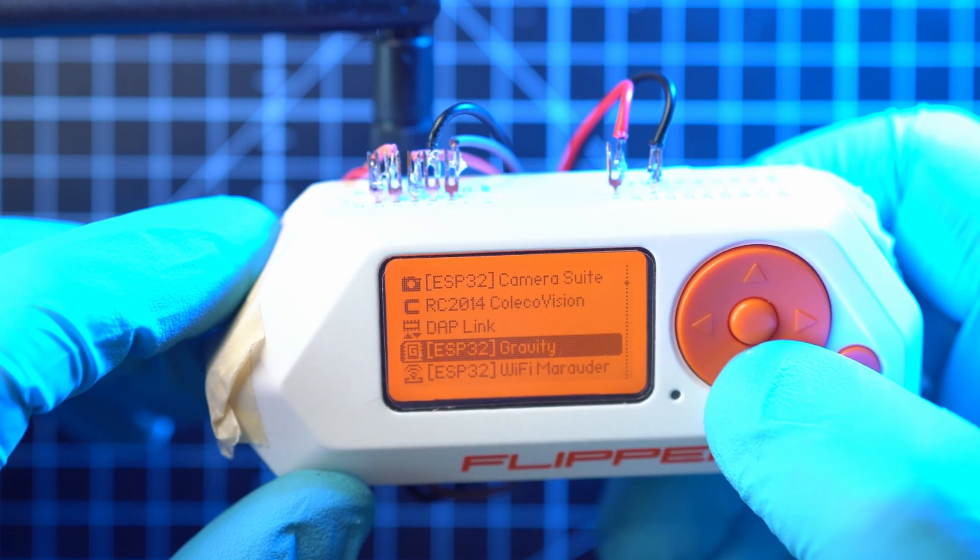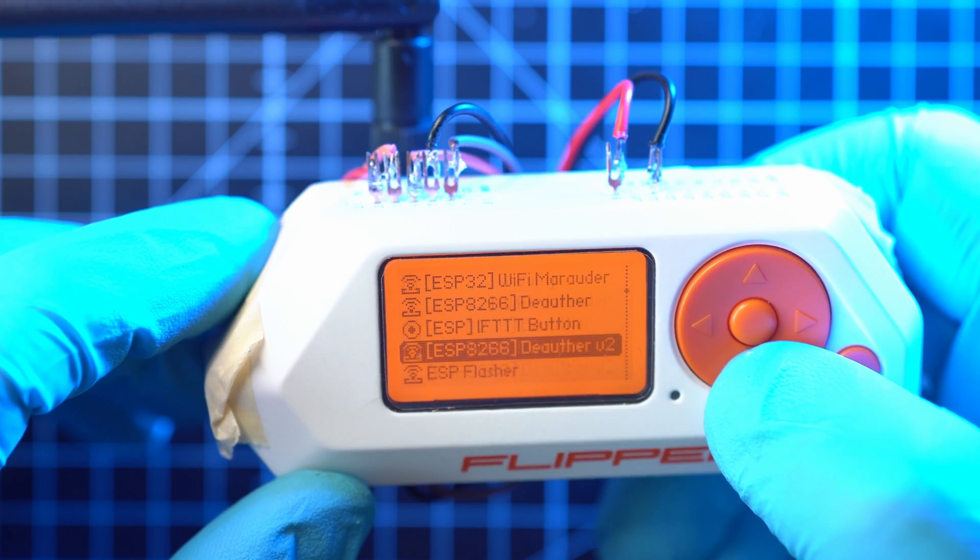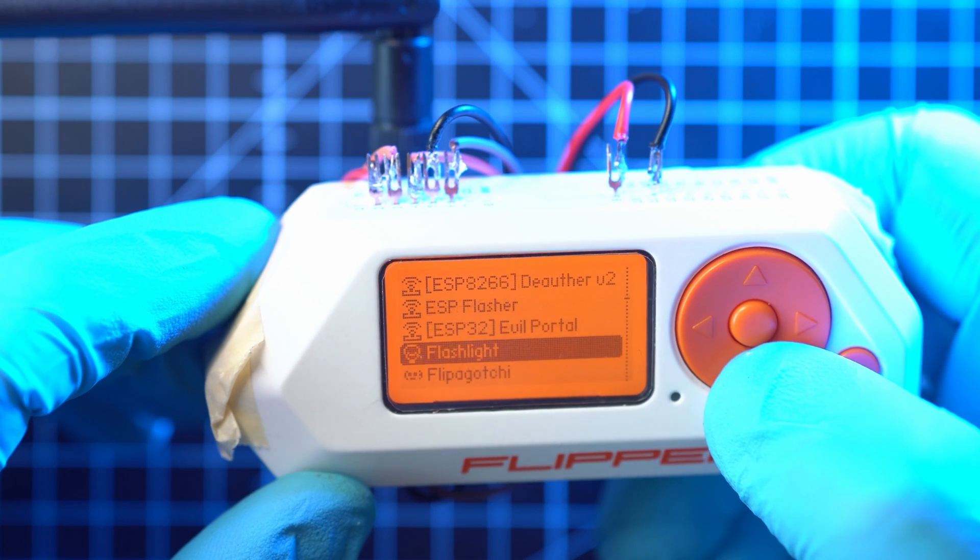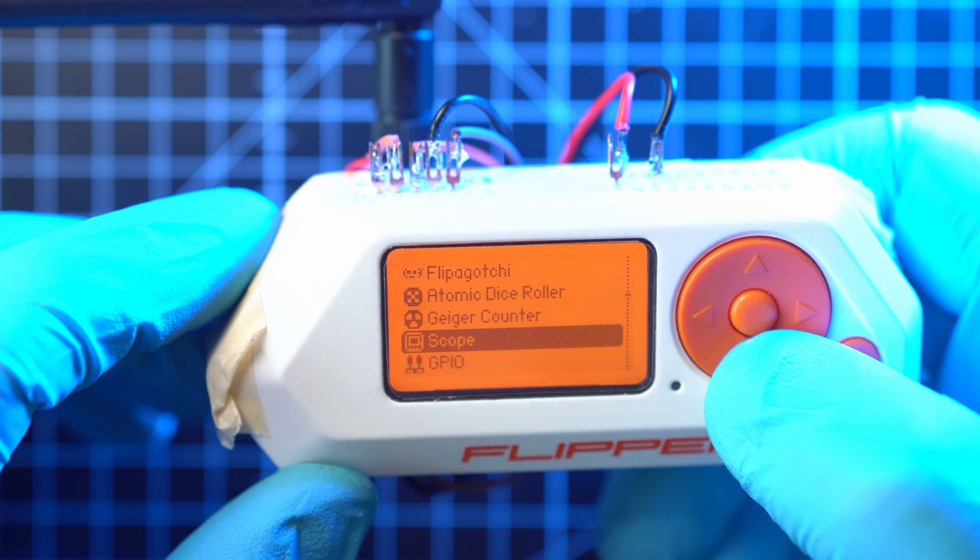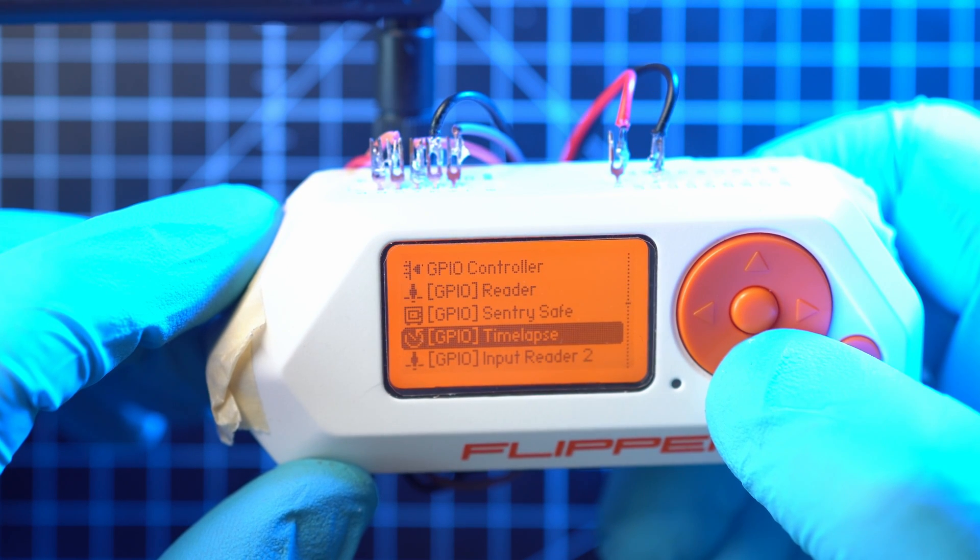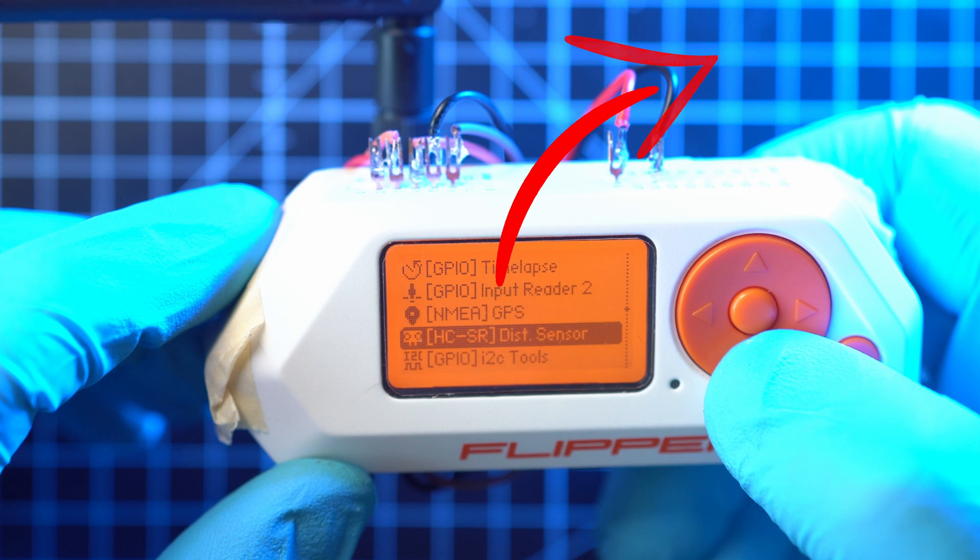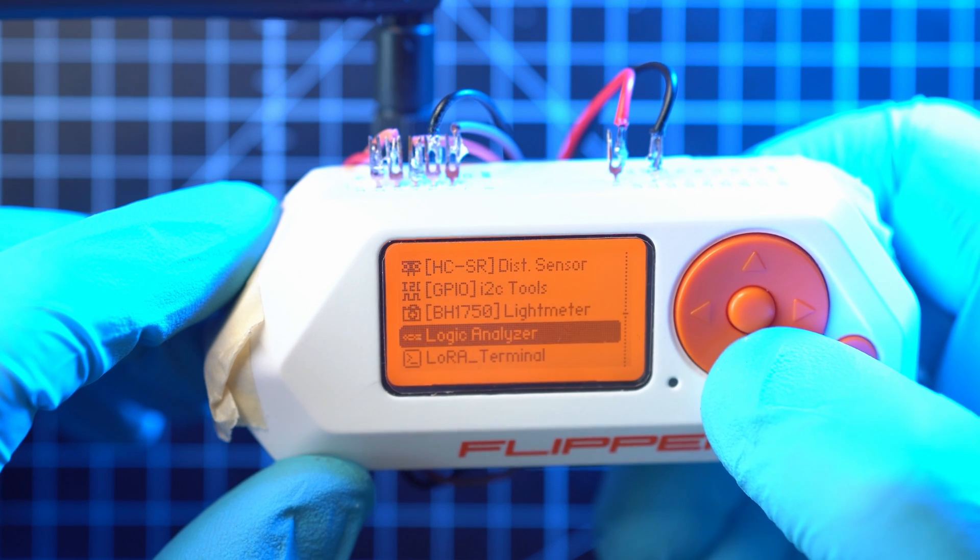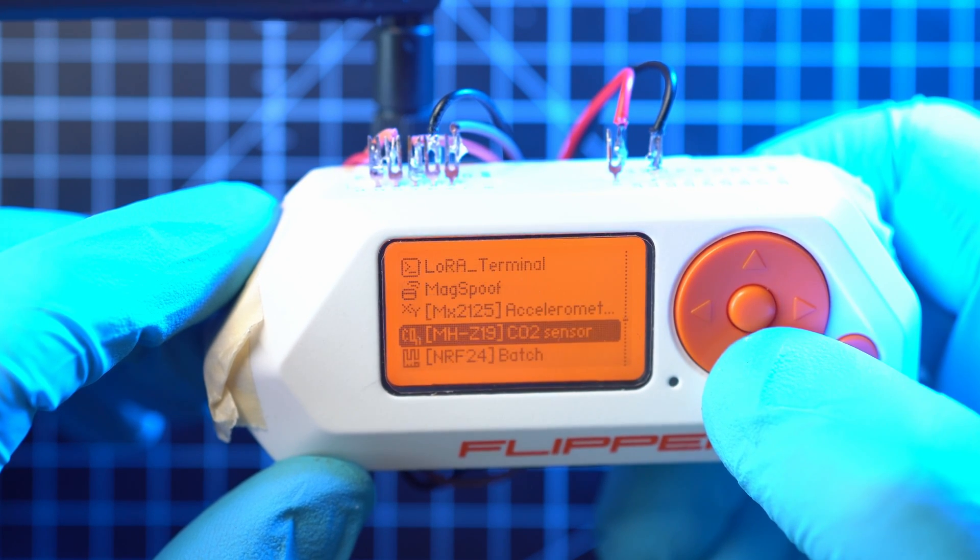This is my module number 8 for Flipper Zero. I have a video about each of them, so please go and check them out. My favorite is CC1101 sub gigahertz module and also GPS module. Make sure to subscribe or else your Flipper won't work.